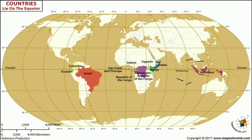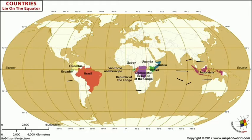To remember the countries that are passed by the equator more clearly, I divide these countries into three parts: western, central or African countries, and the eastern part.